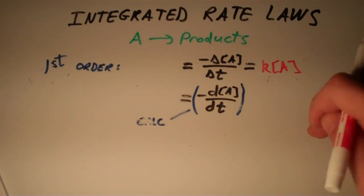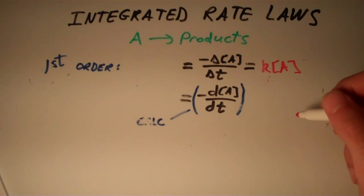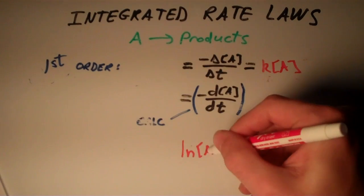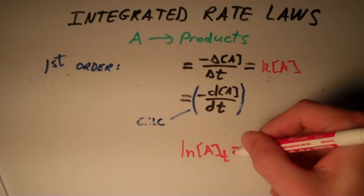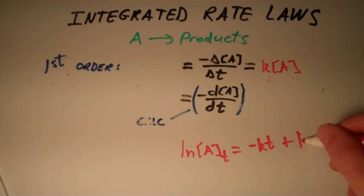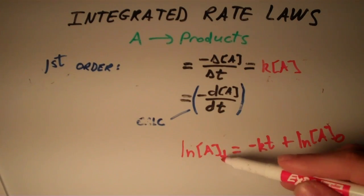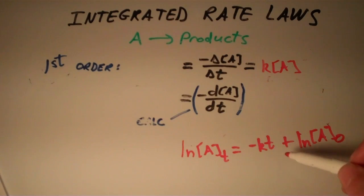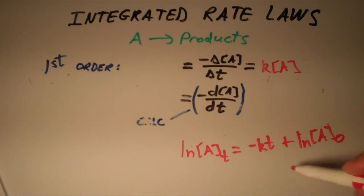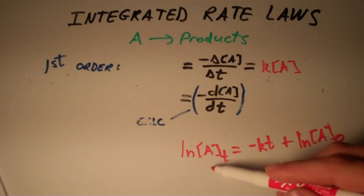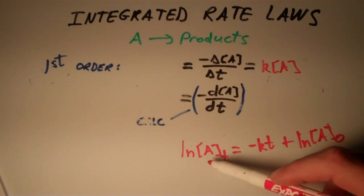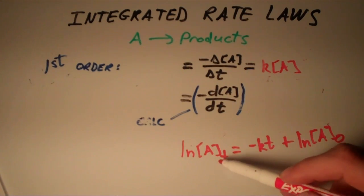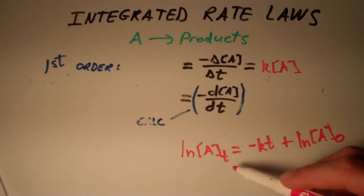If we do the same thing — rearranging and integrating this equation — we'll end up getting the following equation: the natural logarithm of the concentration of A at time T equals negative KT plus the natural logarithm of the initial concentration. Once again, if we know any three of these quantities we can solve for the unknown. Usually the unknown is the concentration, but we could also predict time if we know the concentration at time T, or solve for the rate constant if that's unknown.